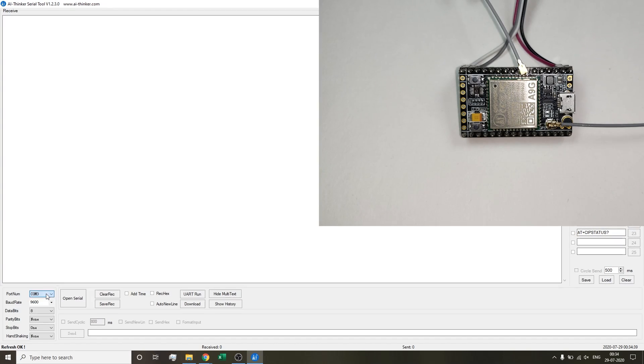I've opened the AI Thinker serial tool that we will require to access the serial monitor to talk to the A9G. All the relevant links of these softwares, documents, and the SDK will be in my GitHub or in my video description link below. Post opening the serial tool, you need to select the correct COM port - that's COM3 in my case - and the correct baud rate, which is 115,200. Then hit the open serial button.